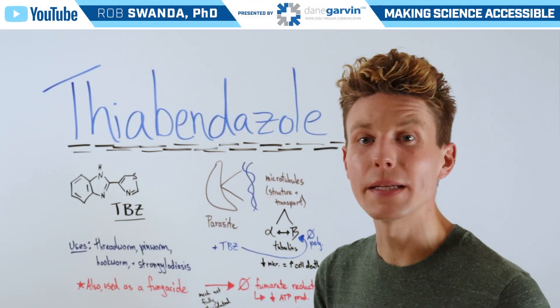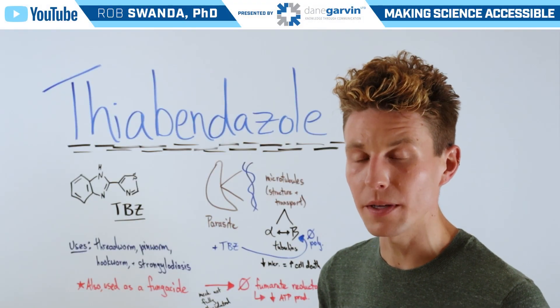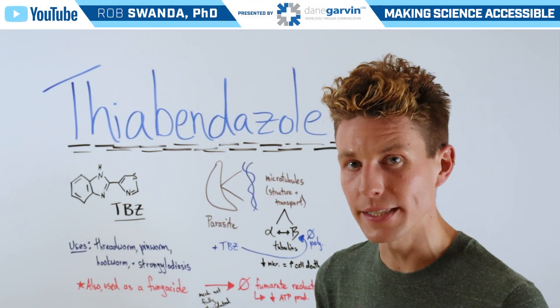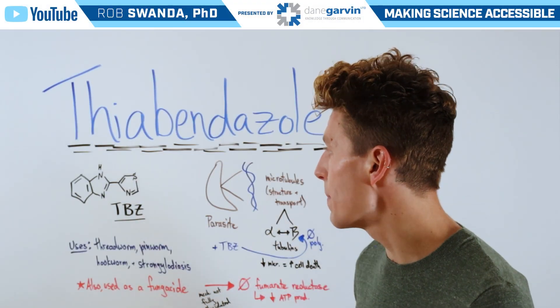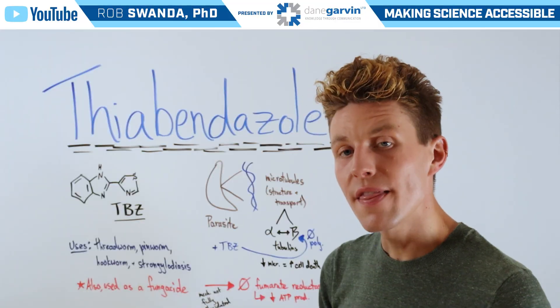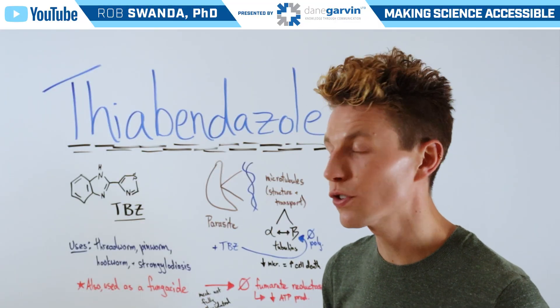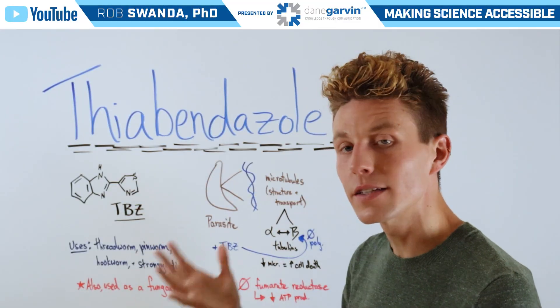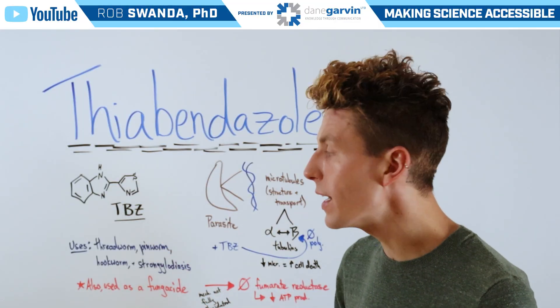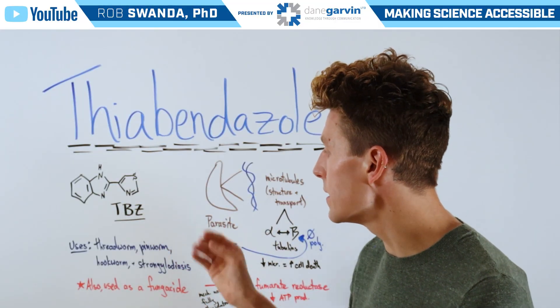Another molecule in the benzimidazole family for us to break down is known as thiabendazole, which has a molecular structure that looks like this and is often abbreviated as TBZ.